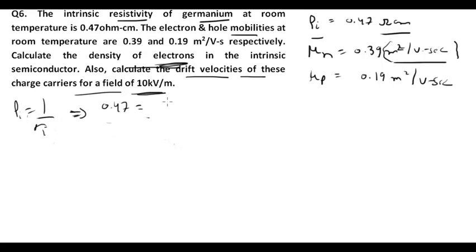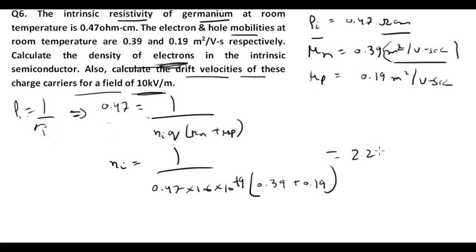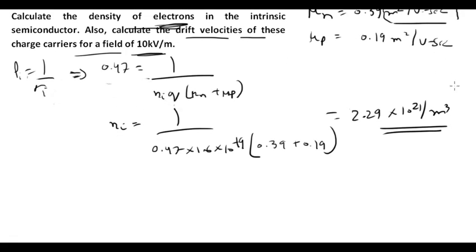We know that resistivity ρ = 1/σ, and σ = ni · q · (μn + μp). So 0.47 = 1/(ni × 1.6 × 10⁻¹⁹ × (0.39 + 0.19)). On solving, the intrinsic concentration ni comes out to be 2.29 × 10²¹ per m³.